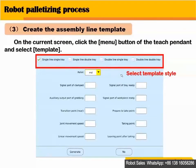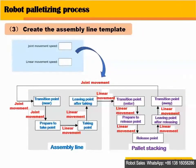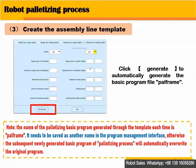Next, create the assembling line template. On the current screen, click the menu button of the teach pattern and select the template. First, select the template style. Then, select the corresponding palletizing process package and set each input and output signal. Set the program movement speed here. Then, corresponding to the palletizing process package, set the input signal numbers and movement checkpoints on the assembling line. Finally, click Generate to automatically generate the basic program.